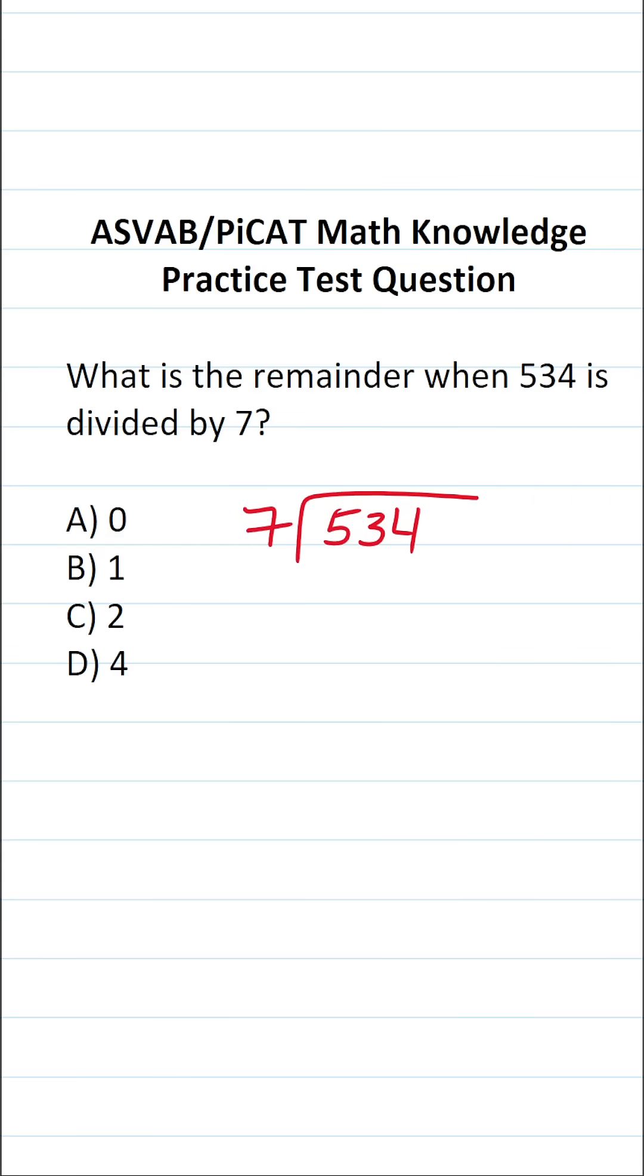So we start by asking ourselves, how many times does 7 go into 5 without going over? It doesn't. So we move on and ask ourselves, how many times does 7 go into 53 without going over? 7 times 7 is 49. 53 minus 49 is 4. And now we drop down this 4.